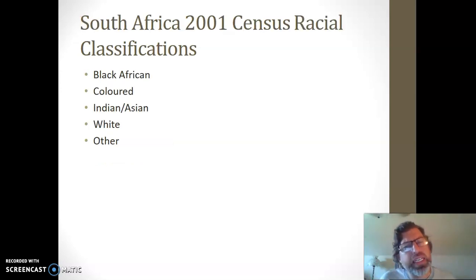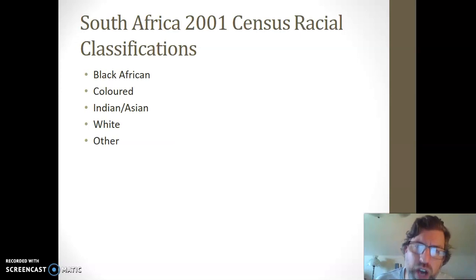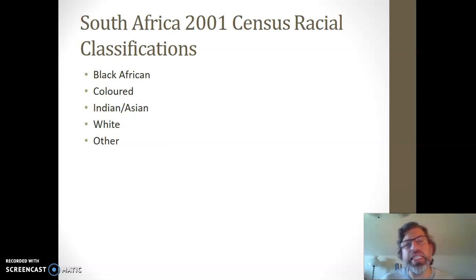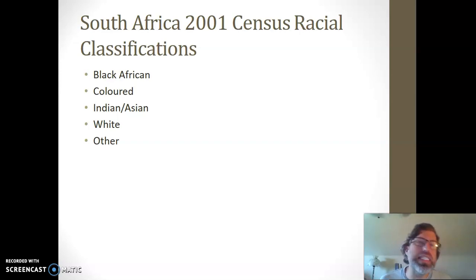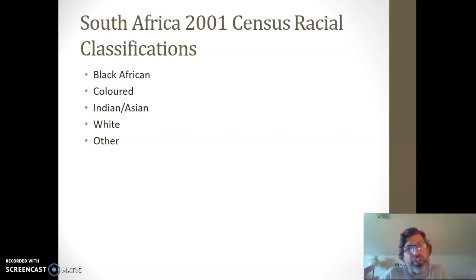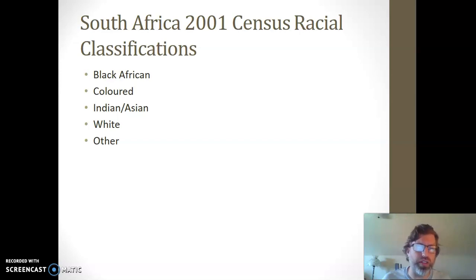Think about this idea of race as a social construct — understand what it means, and then think about these pieces of evidence and how you can see them in your own life to confirm the way that race is socially constructed.